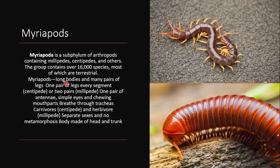If we talk about their body, they have long bodies. There are many pairs of legs, present in every segment. If one pair of legs is present in every segment, those are centipedes. If two pairs of legs are present in every segment, those are millipedes. You can also see this in the diagrams.